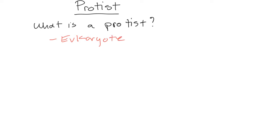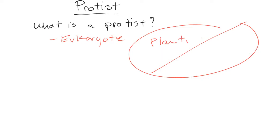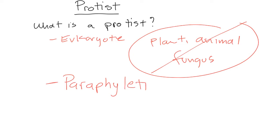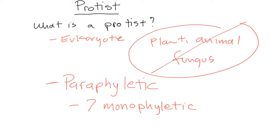A protist is a eukaryote that's not a plant, animal, or fungus. What type of clade do protists form? Paraphyletic. How many groups are within that paraphyletic clade? Seven — seven monophyletic groups, excluding plants, animals, and fungi, which are included in those groups. Okay, that's what a protist is.